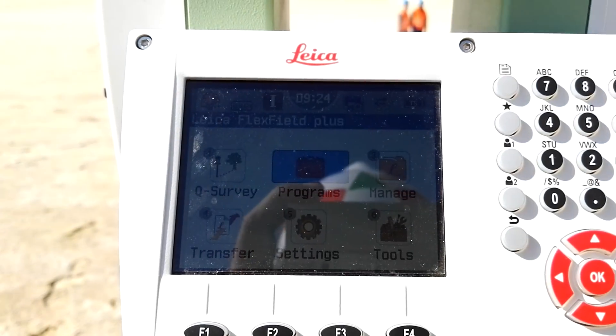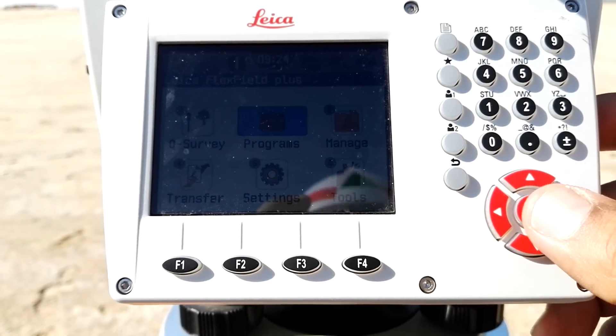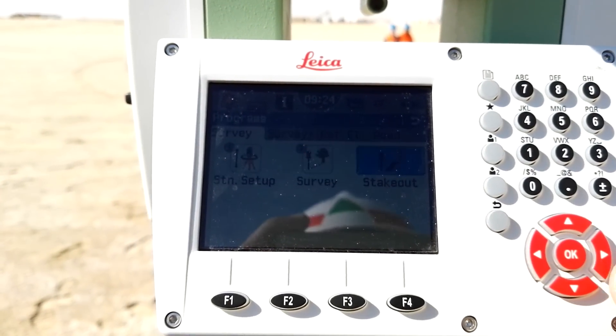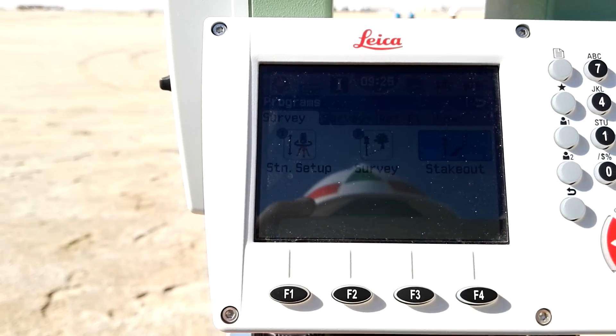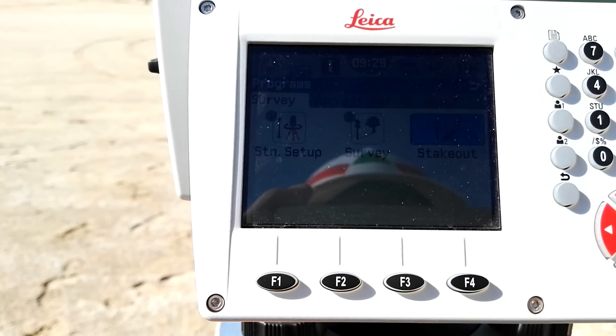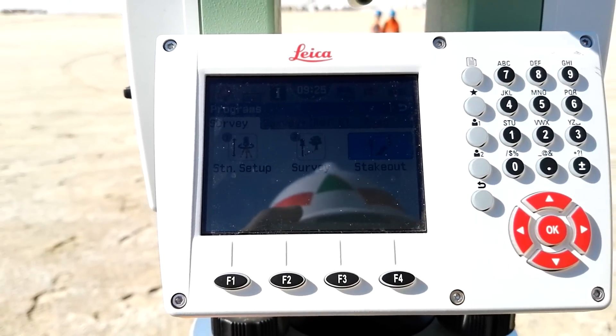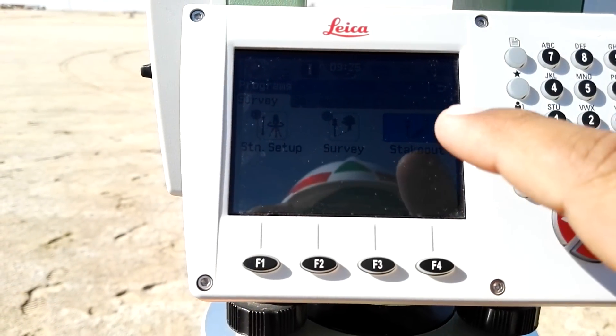So I bring my cursor on the program and then press OK. And then there is a next page. There is three folders: first is station setup, second is survey, and third is the stakeout. So I will go to the stakeout.